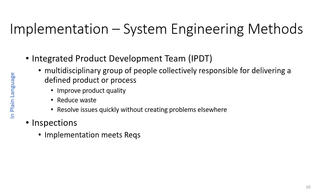That's the idea of the integrated product development team. The second system engineering method is inspections. The idea is to make sure that the implementation is meeting requirements through timely review as it's going along, double-checking to ensure that requirements have been met or that requirements do not need to be modified.